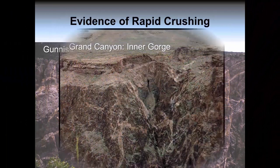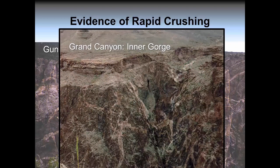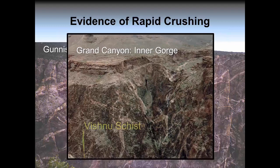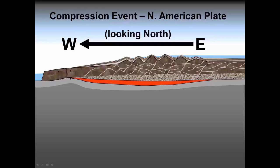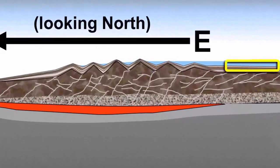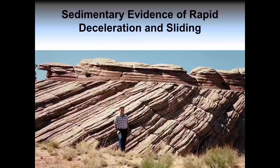In the Grand Canyon, under all the sedimentary layers, this same spiderweb of quartz-filled cracks in crystalline rock is found deep in the walls of the canyon's inner gorge. This basement rock in the canyon is referred to as the Vishnu Schist. While the granite continent was sliding, melting, crushing, and buckling its way to a stop, the sediments piled on what eventually became the Colorado Plateau felt the same sudden force of deceleration. Many sedimentary layers further show that this crushing and compression must have been due to a rapid and massive deceleration and sliding event.